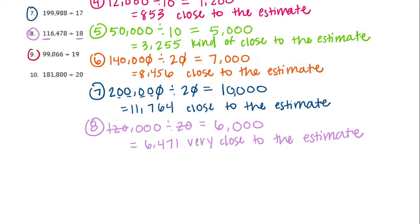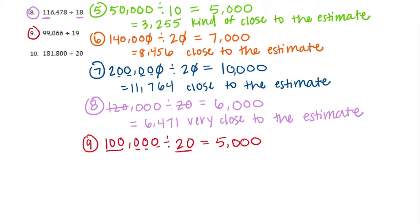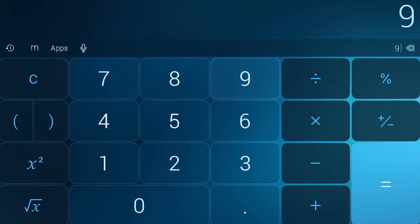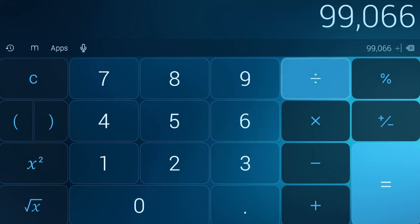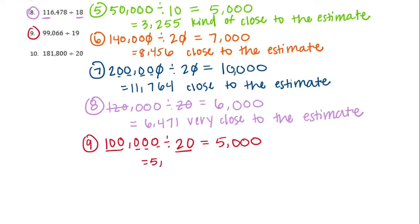Number 9: 99,066 divided by 19. I'm gonna make that 100,000 divided by 20. So 100,000 divided by 20 gives 5, with 1, 2, 3 zeros left — so my estimate is 5,000. The actual answer: 99,066 divided by 19 is 5,214. That's very close to 5,000.